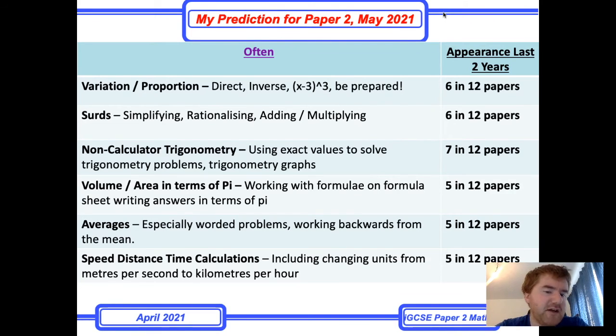Speed distance time calculations—this was quite popular about five or six years ago and has now come back into fashion. This includes changing units, particularly meters per second to kilometers per hour, and working backwards through that. Know your speed distance time triangle and be able to work with that. It appears five out of 12 times, so it's something to work with.